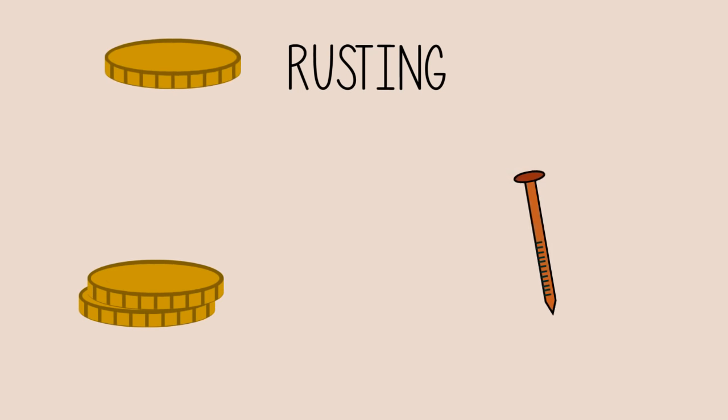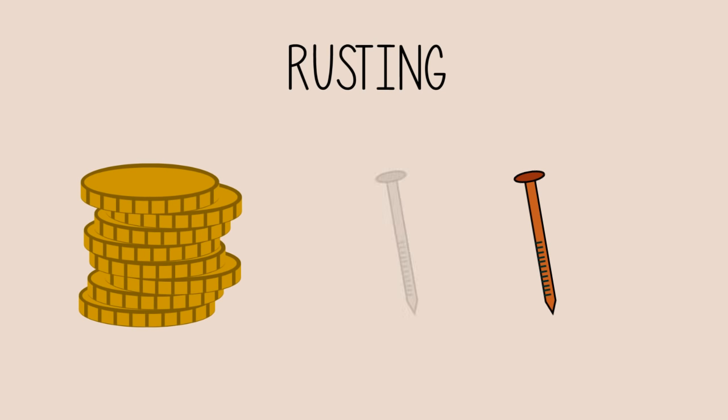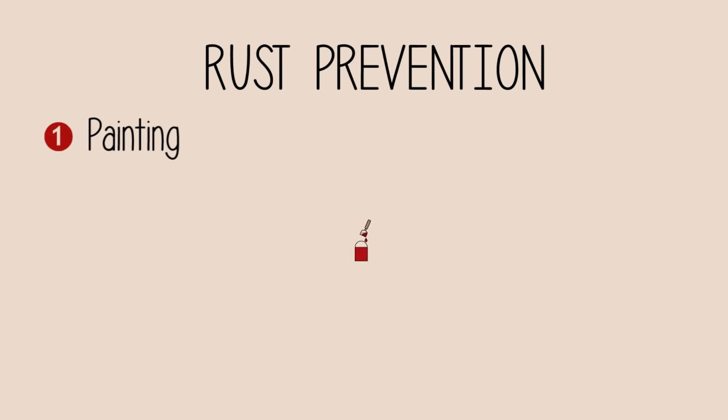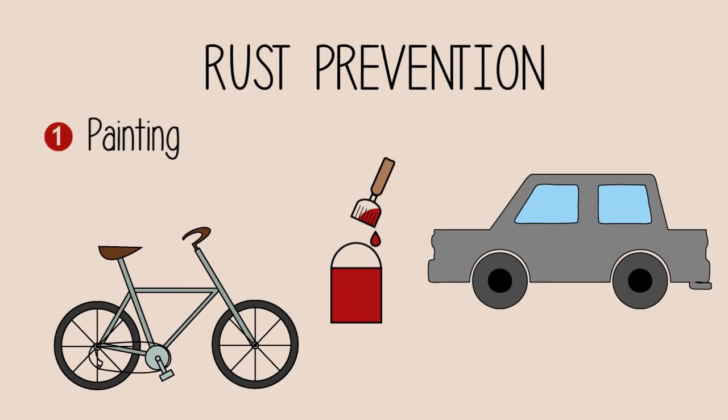Rusting can be very costly if we have to constantly replace items made of iron and steel. Rust can be prevented if we paint the areas exposed to oxygen and moisture. This is done on many bicycles and cars.